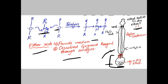As the alkyl halide reacts drop by drop with magnesium, cloudiness appears. After completing the chemical reaction, a clear solution of alkyl magnesium halide forms. The alkyl magnesium halide exists dissolved in diethyl ether as solvent, which is directly used for further processing. If the reaction does not start, a small amount of iodine crystals are added to speed up the reaction, and alkyl magnesium halide is produced.